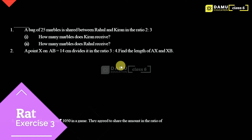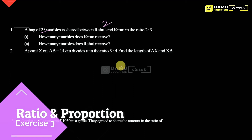A bag of 25 marbles is shared between Rahul and Kiran in the ratio 2 is to 3. So Rahul will get 2 parts and Kiran will get 3 parts. So 2 is to 3 — you can also take it like 6 by 9.